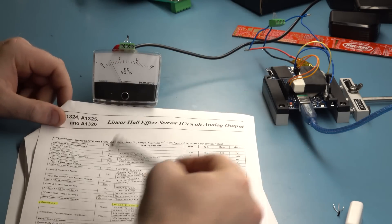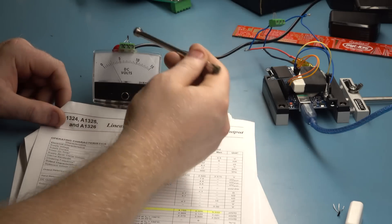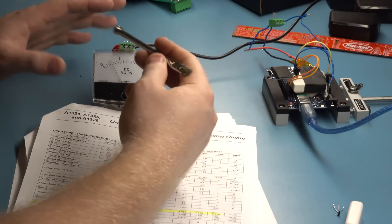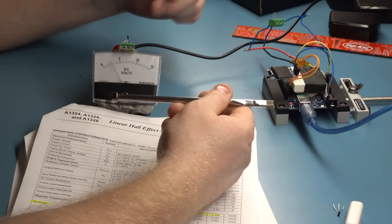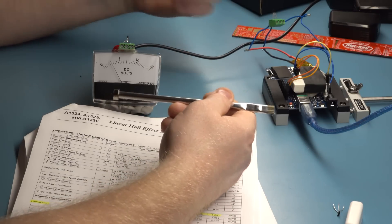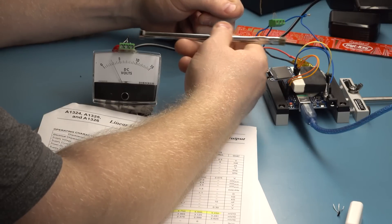So this is an A1324 Hall effect sensor and the way it works is you give it an input voltage and it produces an output voltage that's proportional to the field strength that the chip is introduced to.